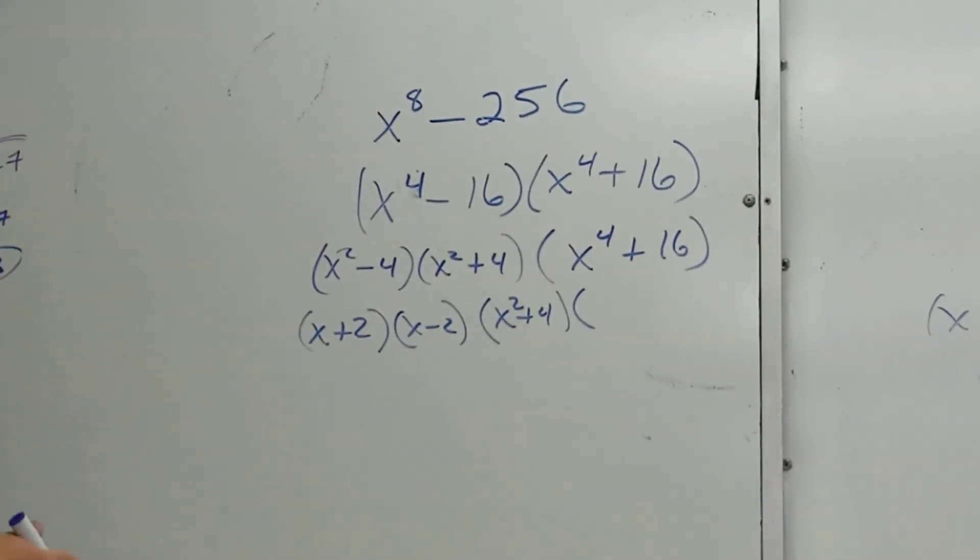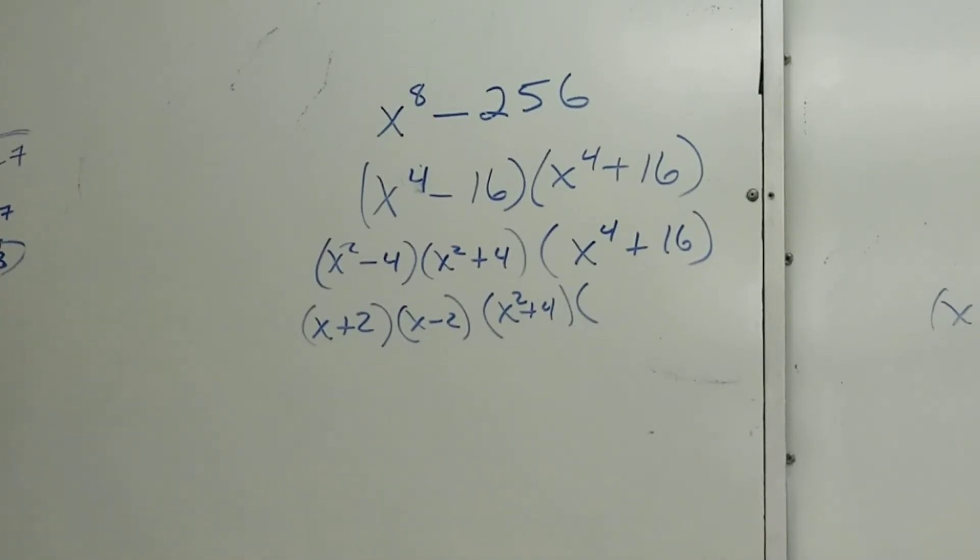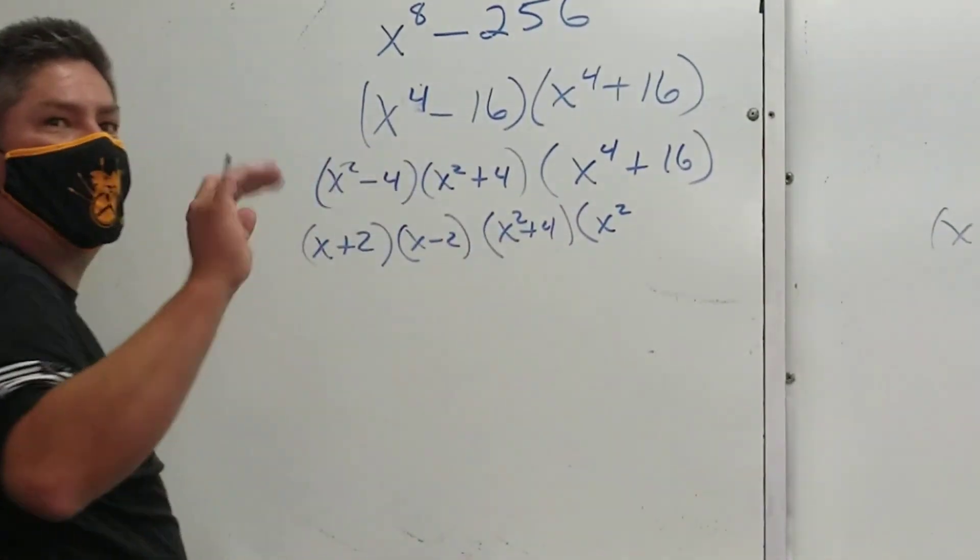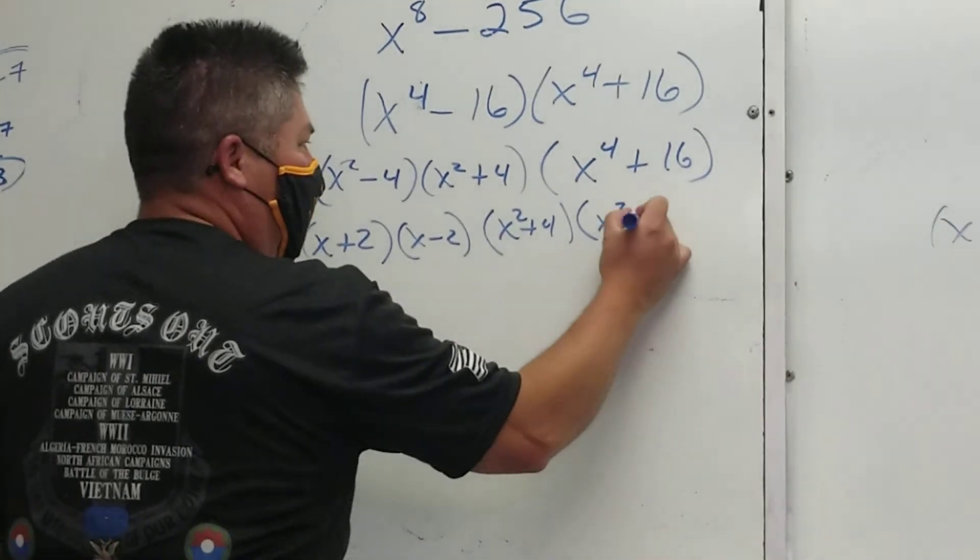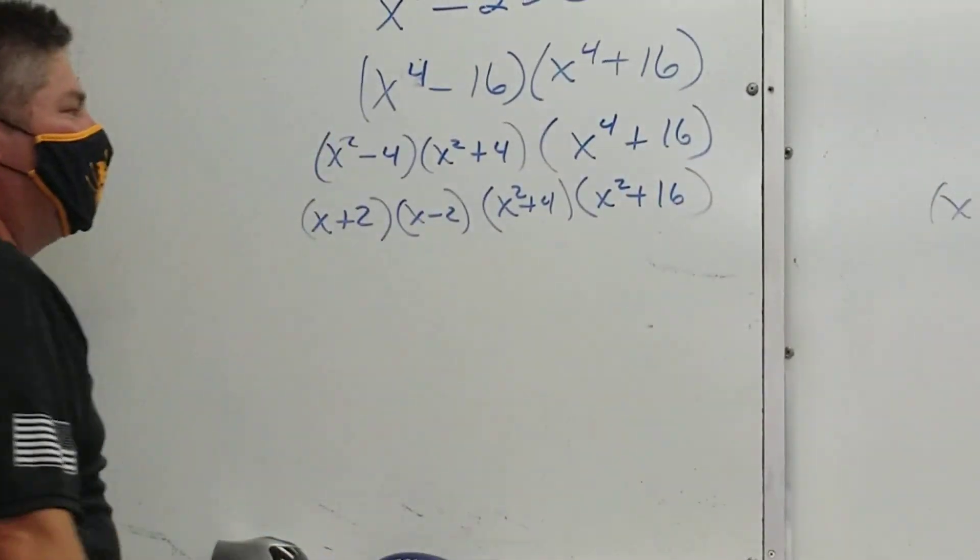Every time you look at that and you say, I can't factor, you should just say, sum of a. And then you're like, yep, can't factor. That's it.